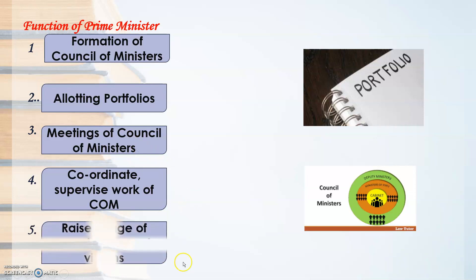Fifth is to raise the image of the country and support the victims. It is the duty of the Prime Minister to see that India develops and does not remain a developing or underdeveloped country. He must also support victims — people who have faced severe problems, like those without food or facing natural calamities — and help those who have gone through very severe problems in their life.